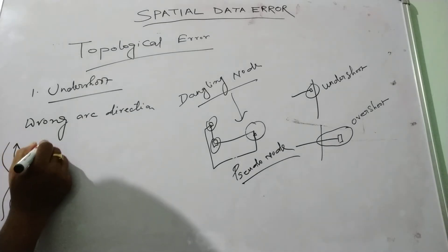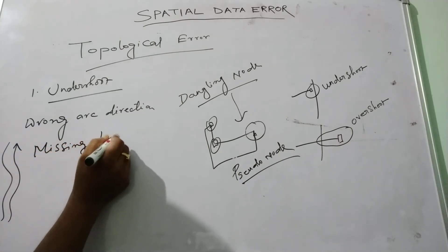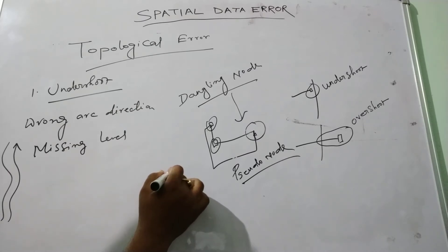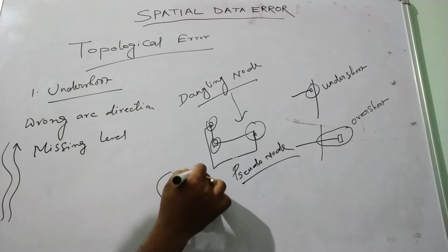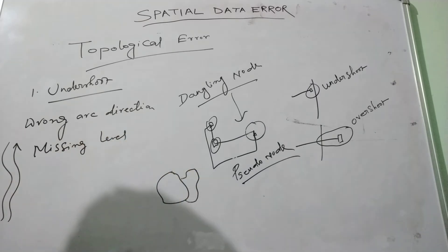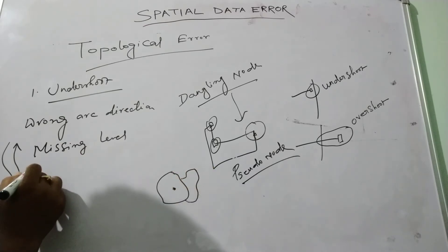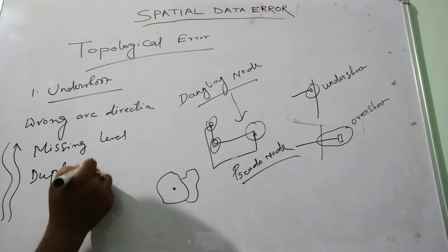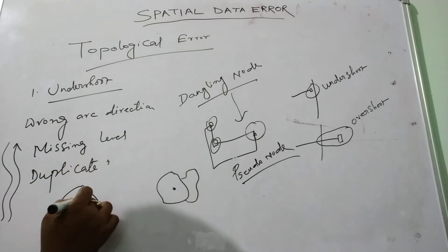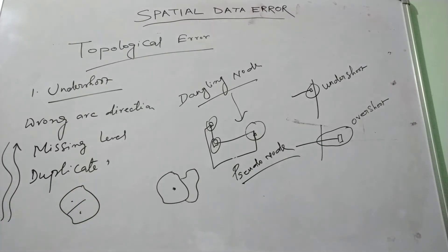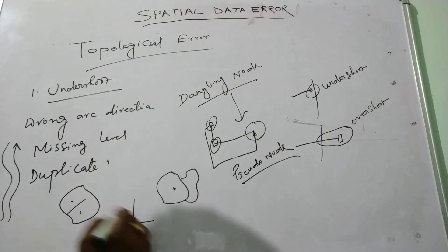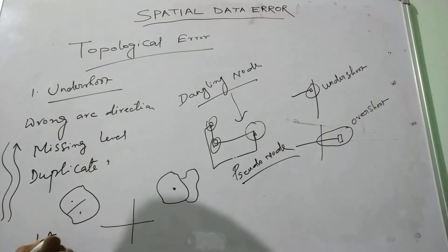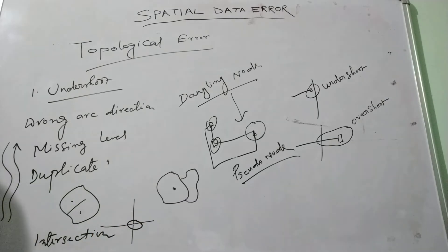Missing label: if there are two polygons and there is no label point, this is called the missing label. Duplicate label: when a polygon has two label points, this is called the error of duplicate label. Intersection: during an intersection, if no node appears where two lines cross, this is also a topological error.